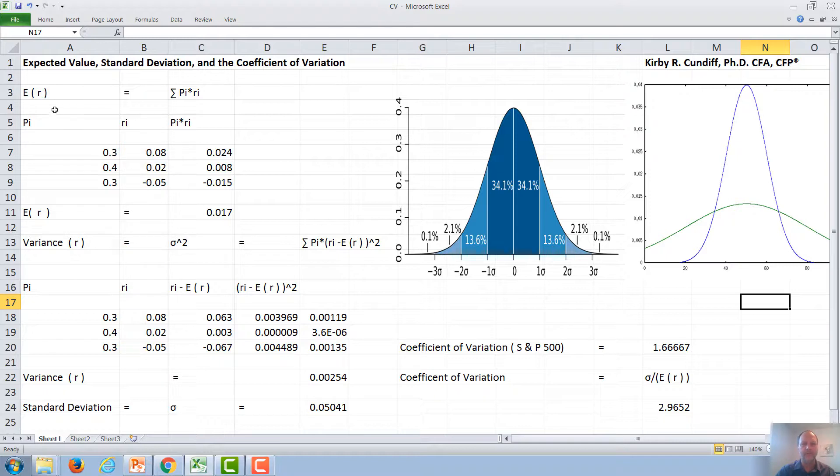For our particular investment, when we first calculate expected value, we need to take each probability times each rate of return and sum them. A probability of 0.3 times the rate of return of 0.08 gives us 0.024, 0.4 times 0.02 is 0.008, and 0.3 times negative 0.05 is negative 0.015. Summing all these, we get an expected rate of return of 0.017 or 1.7%.